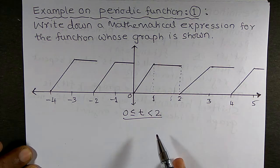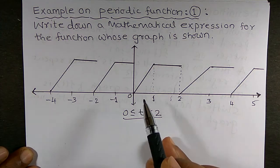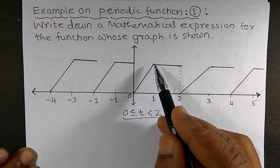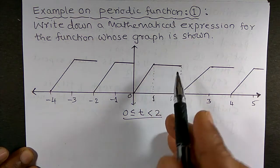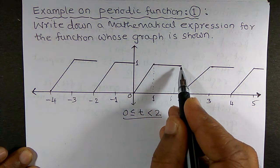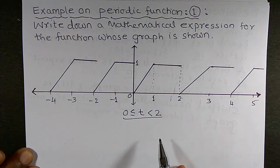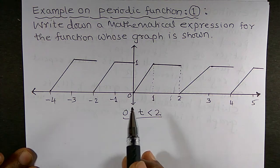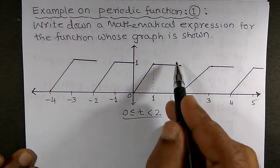Note that the function contains two parts, or I can say two stages: the ramp with slope 1, and the constant function, namely 1. So we need two intervals — 0 to 1 and 1 to 2 — to describe this function.